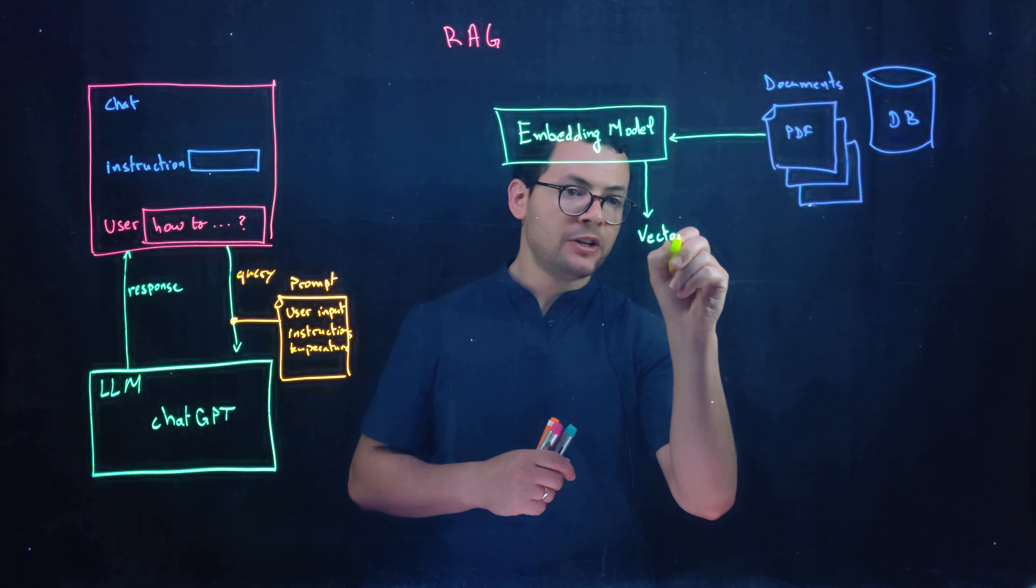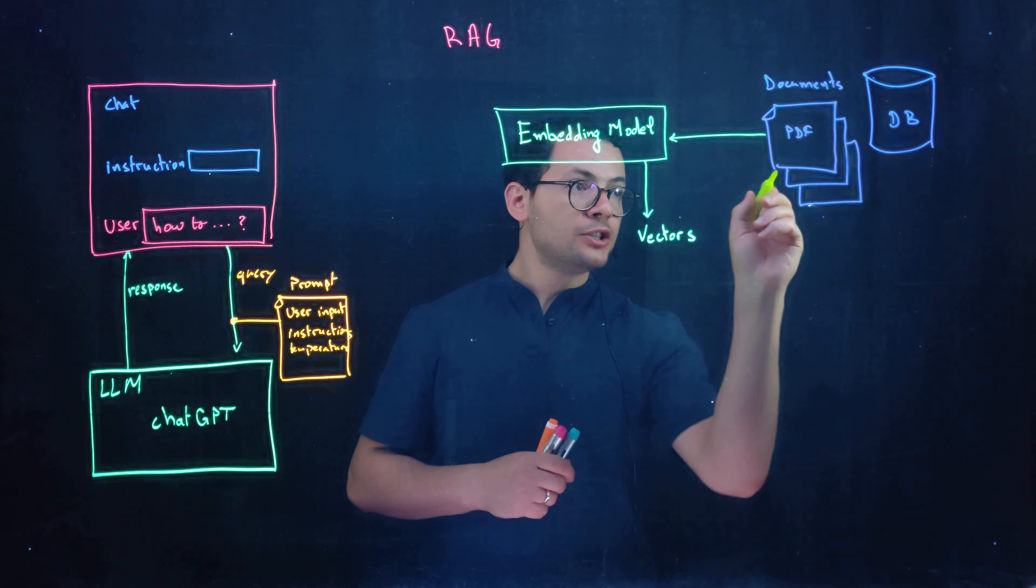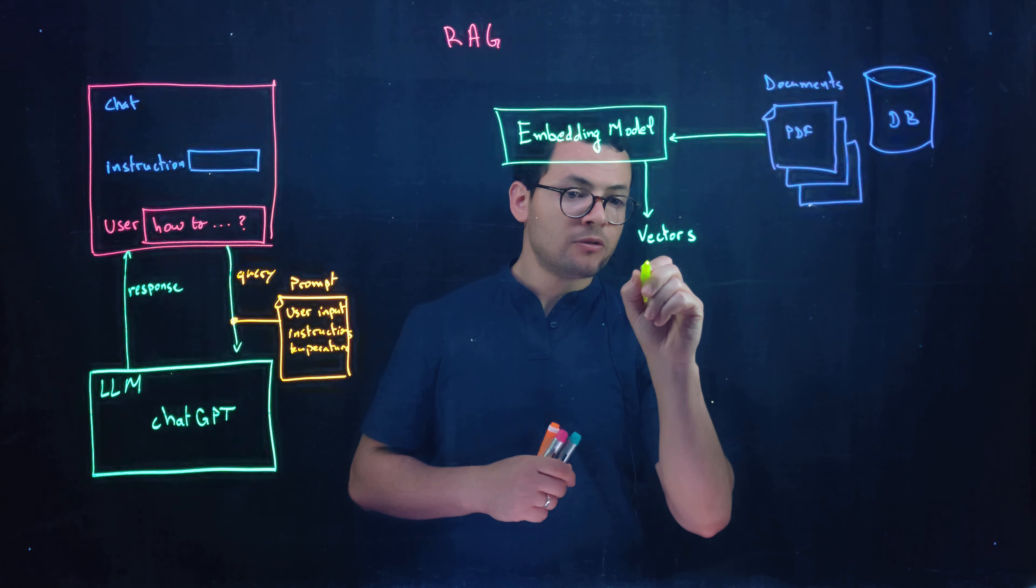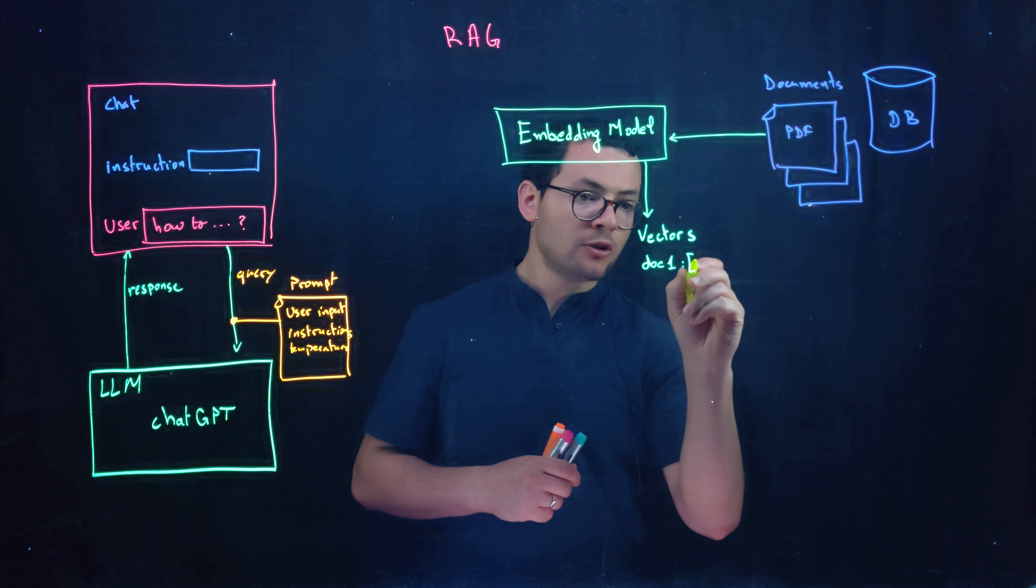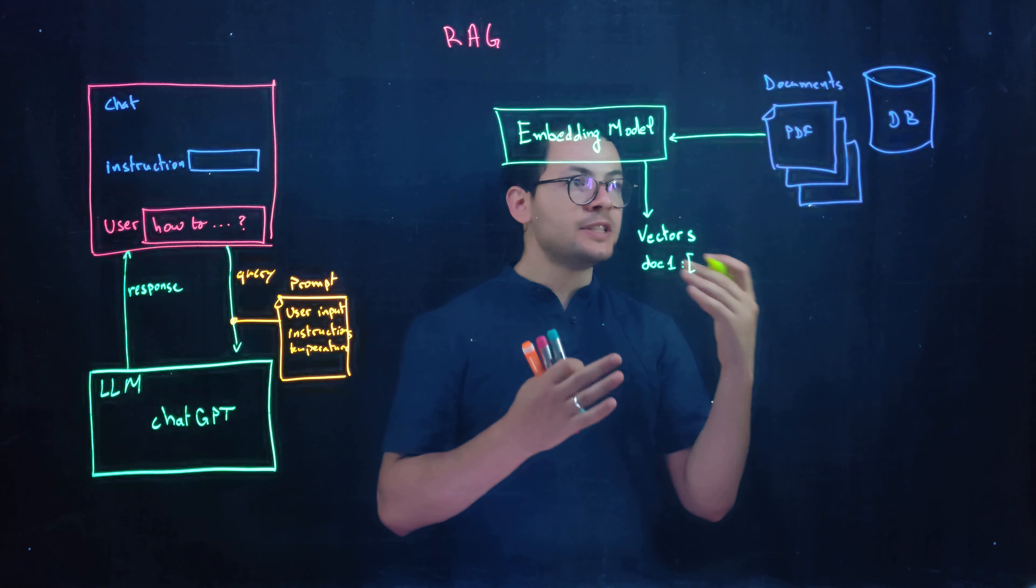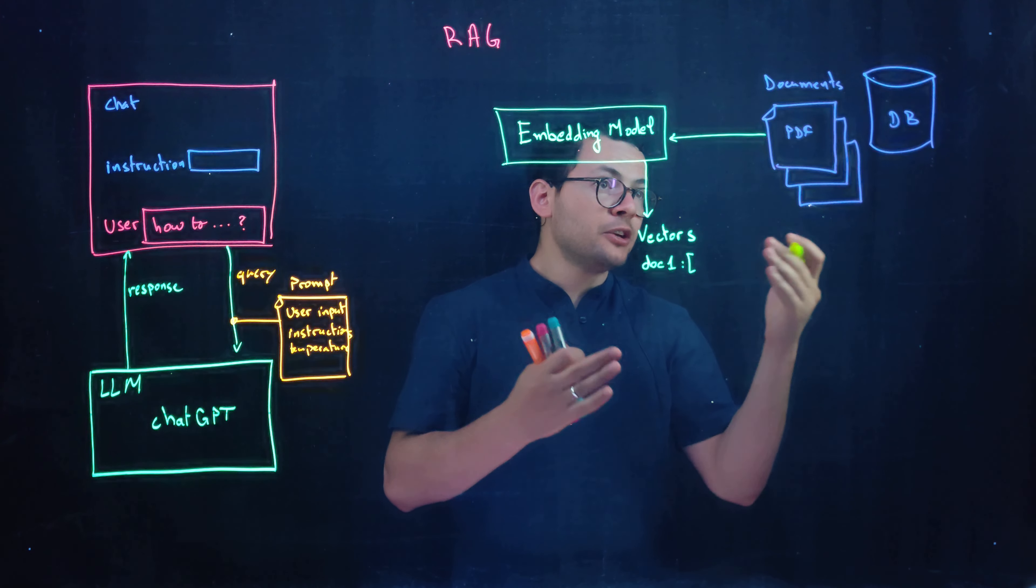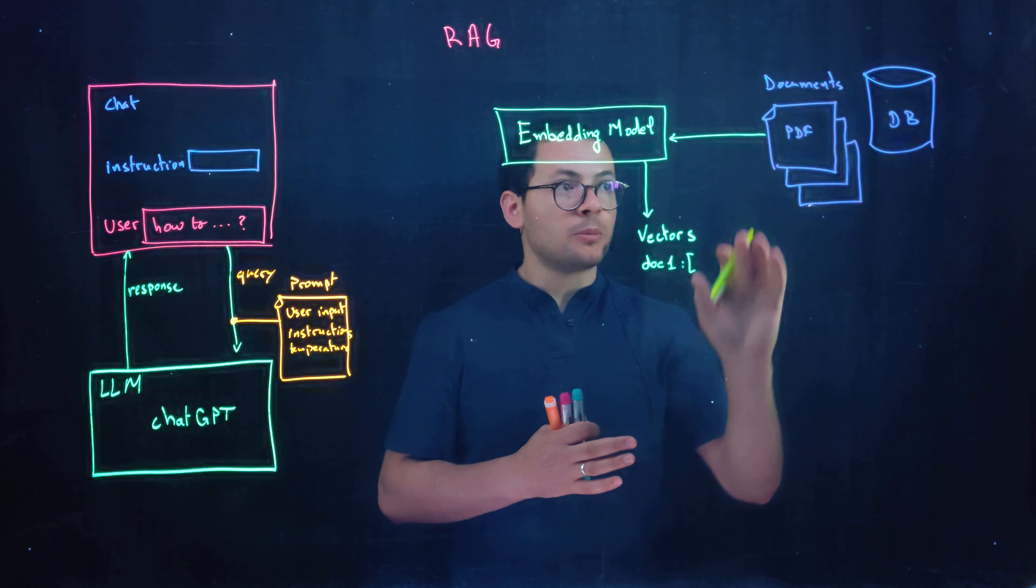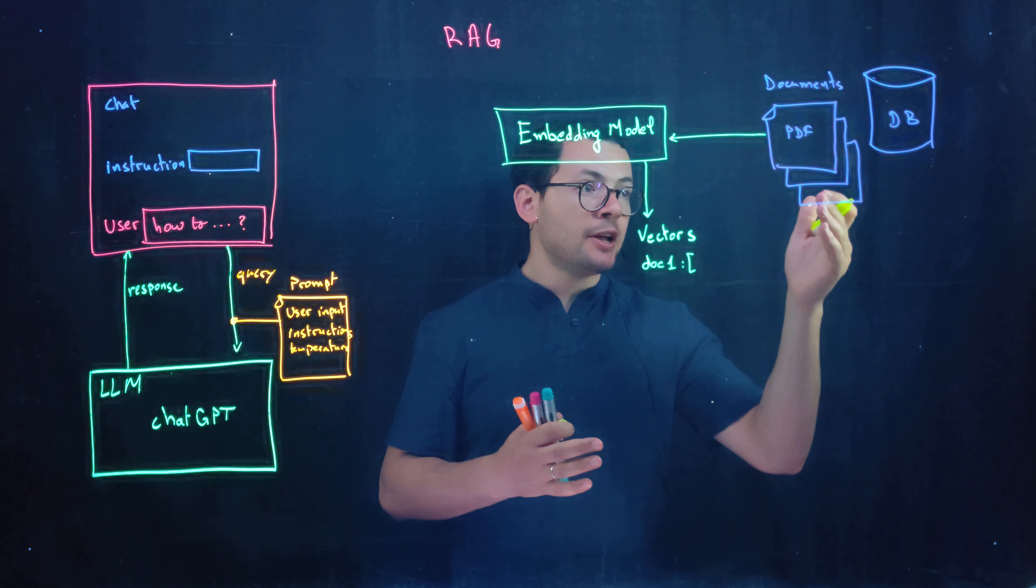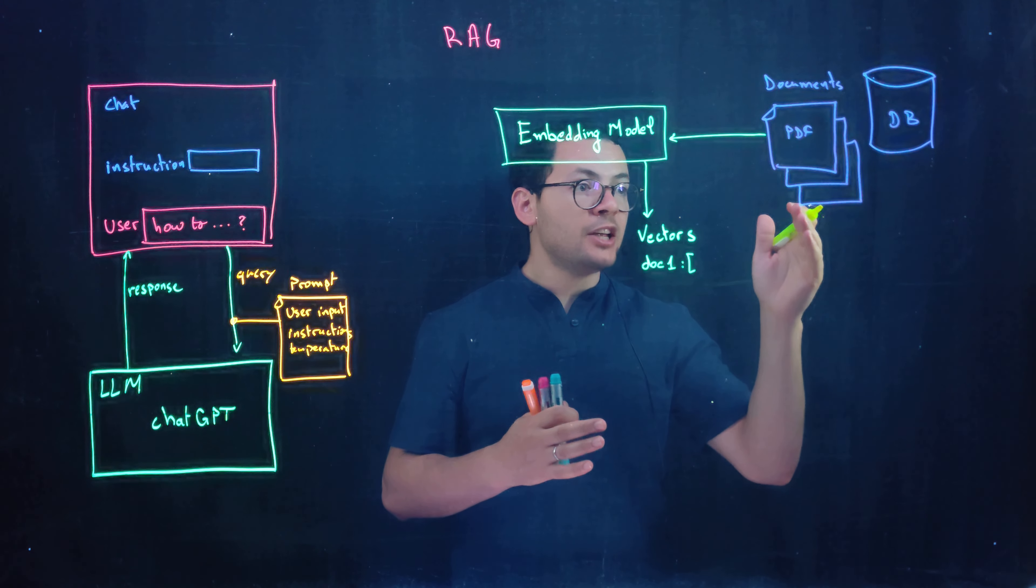For each document it would have its own vector. So document number one would have a vector. And the vector is a representation, is a mathematical representation about each document. A document here might be either a text or paragraph, a page.